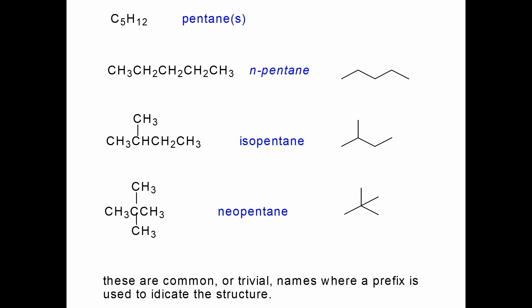Normal pentane is going to have 3 isomers: normal pentane, isopentane, and neopentane. Isopentane is 2-methylbutane, while neopentane is 2,2-dimethylpropane. These are the isomers of pentane. It means that the more the number of carbons from C4, the more the isomers.